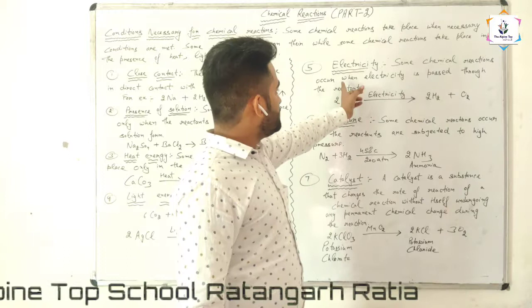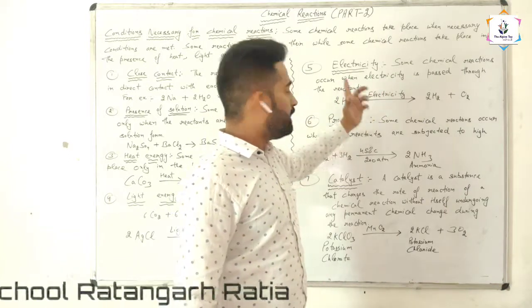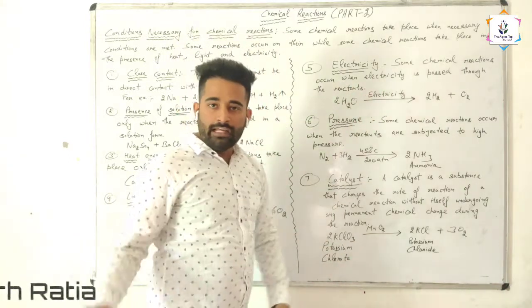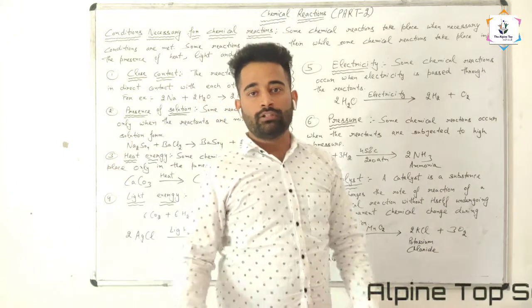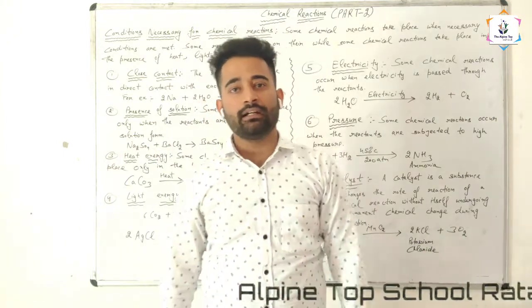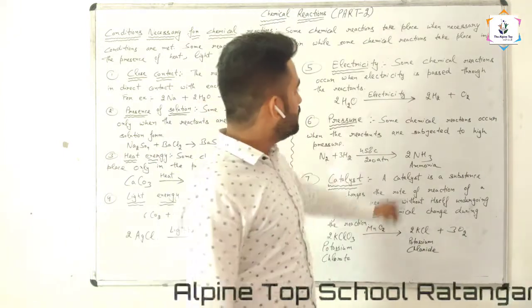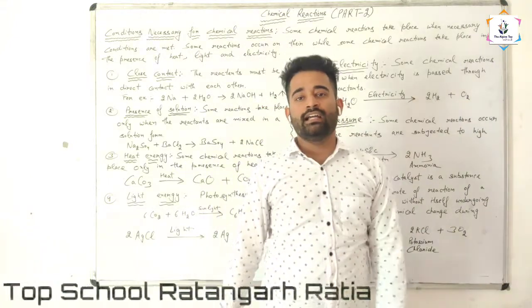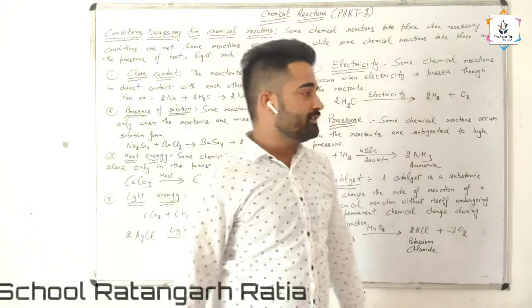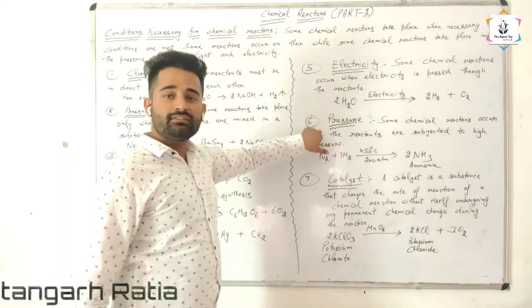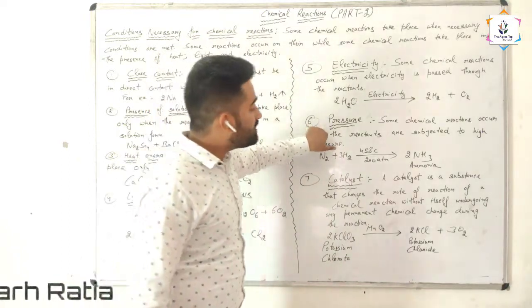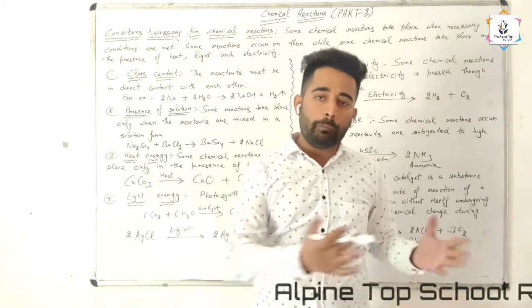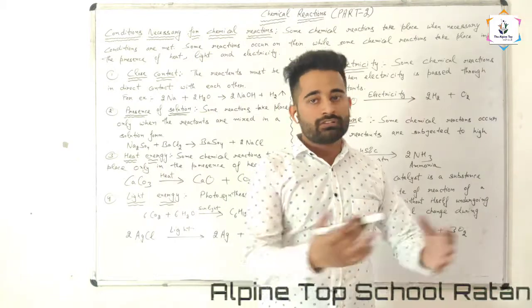The fifth condition is electricity. Some reactions occur when electricity is passed through the reactant. For example, when electric current is passed through water, two gases are formed: hydrogen and oxygen.